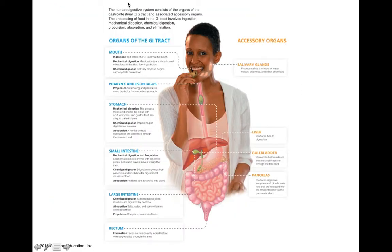On the left we have all of the organs of the GI tract. On the right we have accessory organs — organs involved in digestion but that don't actually come in contact with the food or food products. Digestion begins in the mouth, where we have two types of digestive processes: chemical and physical, or mechanical. Mechanical digestion starts with mastication, or chewing, which allows us to tear, shred, and mix our food.